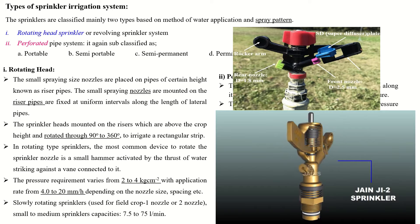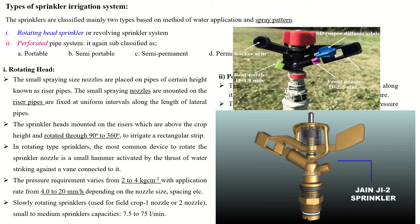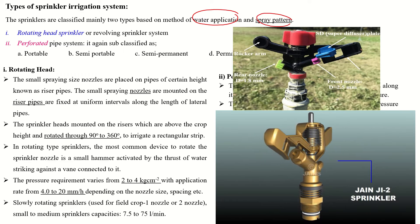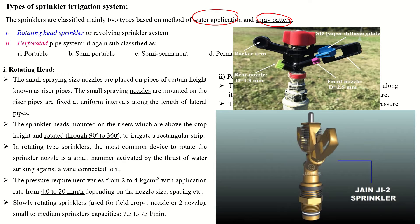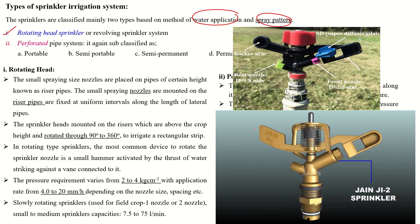There are different types of sprinkler irrigation systems, classified based on the application of water and spray pattern. There are two major types: one is the rotating head, as shown in this picture where the sprinkler will rotate, and the next one is the perforated pipe system.